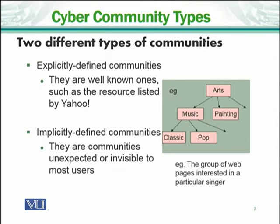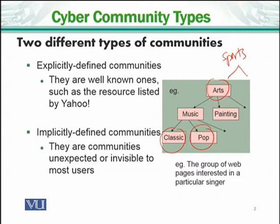Explicitly defined communities are clearly defined. For example, we have a figure showing people who are pop music lovers, classic music lovers, or arts lovers. If I want to make a community of sports, I will create a topic for that sports community and then branch into cricket. This is an explicit community — a user on the net sees that they like cricket and joins that community.